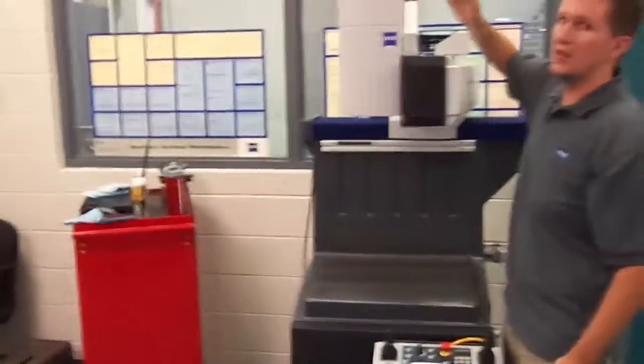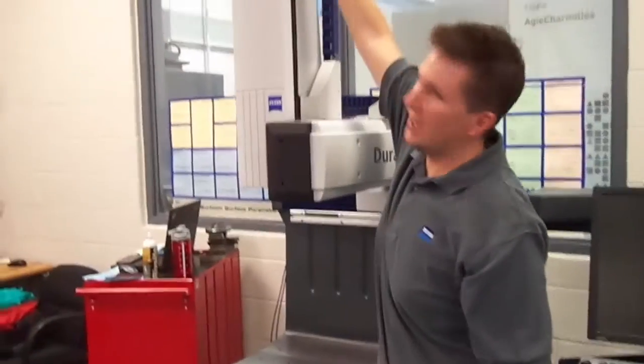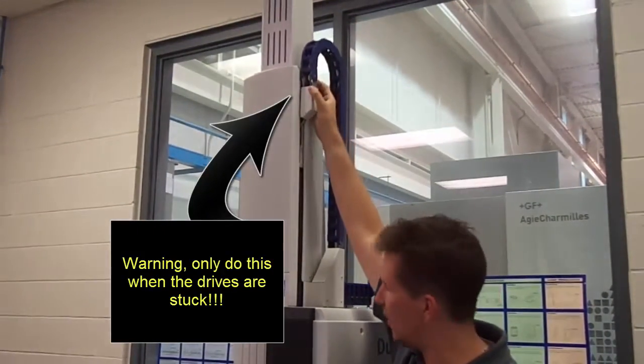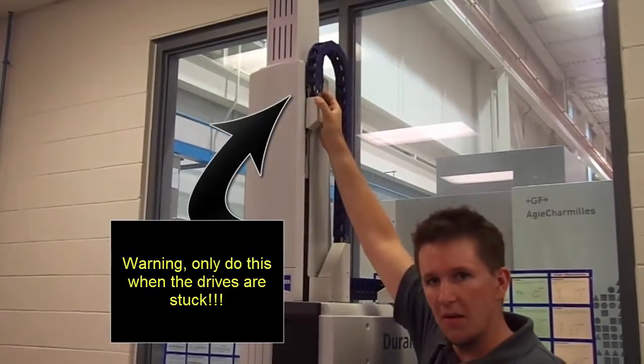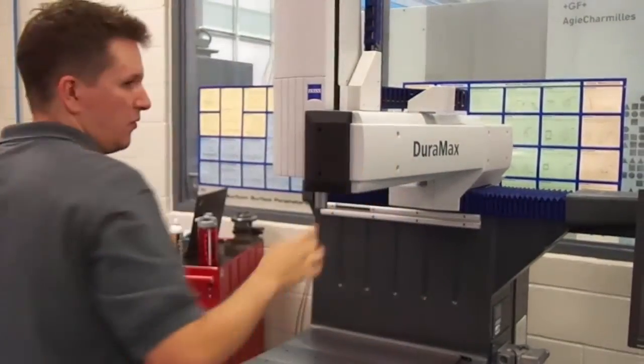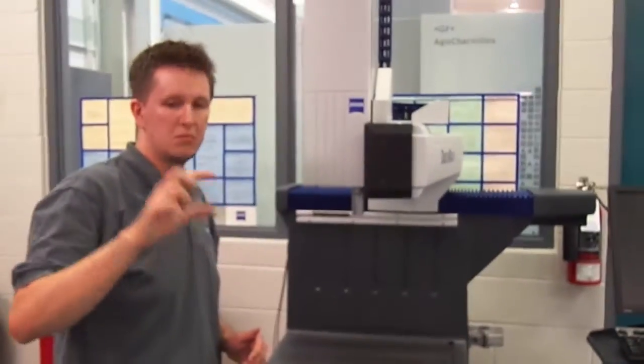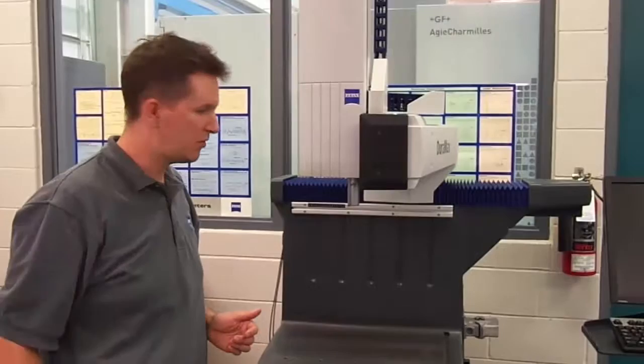The easiest thing to do for the Duramax is to grab the Z-axis cable carrier harness and just pull down with your hand. It shouldn't take a lot of force. And that's all there is for that. And that exposes the probe head again. As long as you come off of the top by an inch or so, you'll be fine.